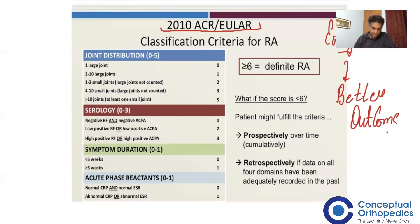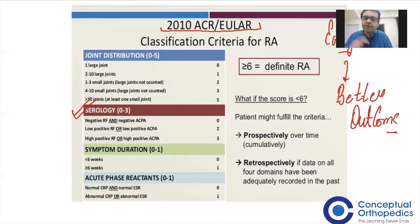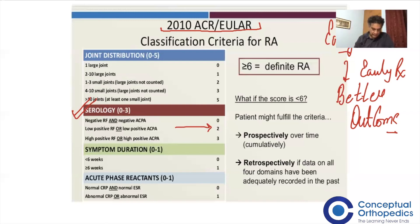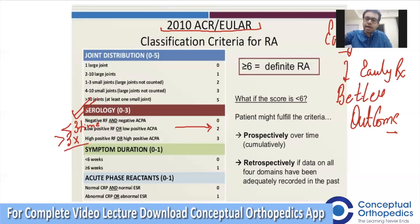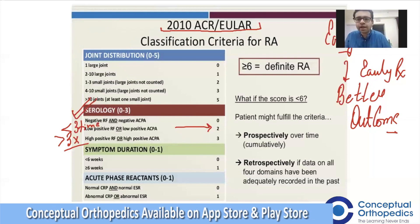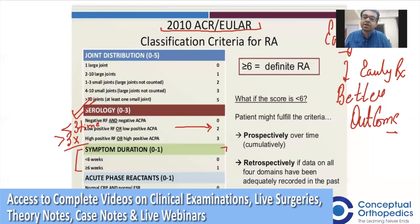In the serology section — the second red block — if serology is negative, you give a score of zero. Low positive rheumatoid factor or low positive anti-CCP gives a score of two. Low positive means more than the upper limit of normal but less than three times the upper limit of normal. High positive means more than three times the upper limit of normal, giving a higher score. The ACR/EULAR criteria also includes symptom duration — even if disease duration is less than six weeks the patient gets zero points, but if the total score is six or more, the patient can still be diagnosed with rheumatoid arthritis.